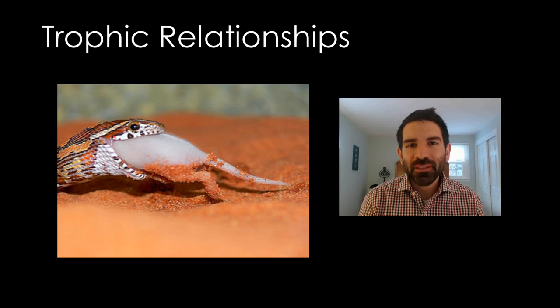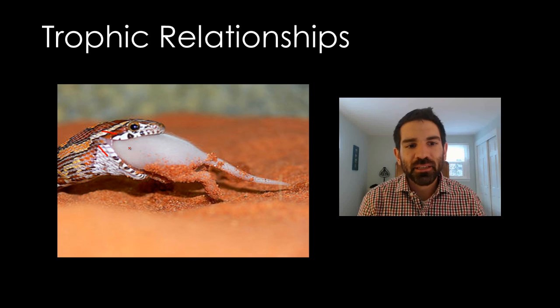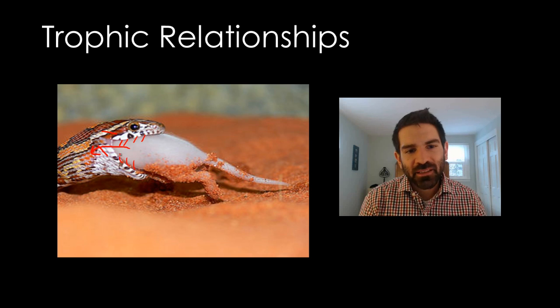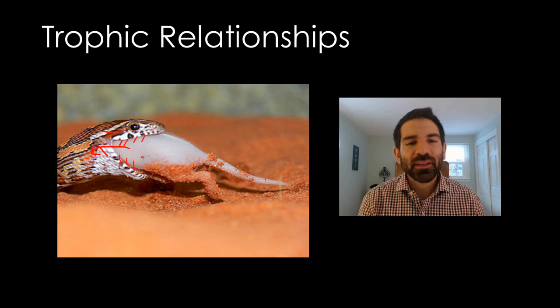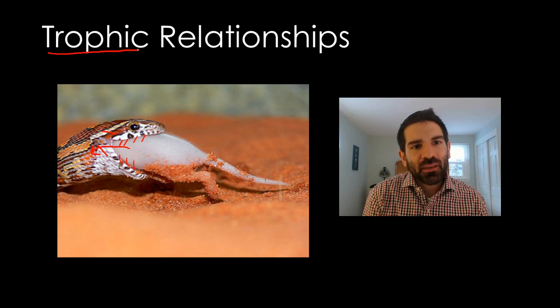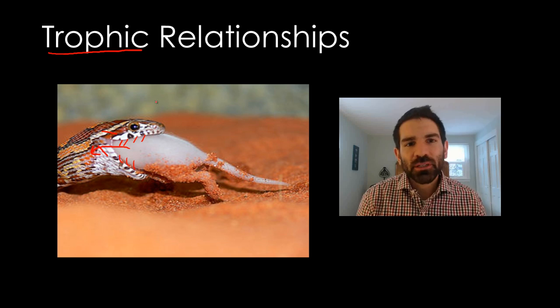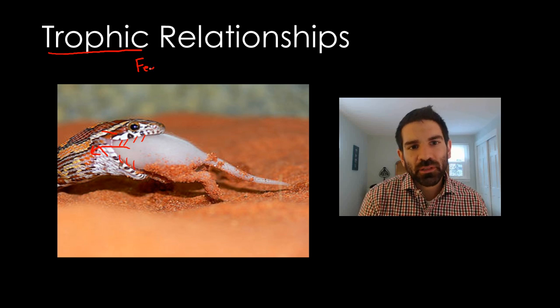Hi, this is Mr. Judd and this is a corn snake. It can unhinge its jaw and take in its prey all in one bite. It also has these backwards pointing teeth that help as the prey struggles so it can only go one way and that's down. This video is about trophic relationships or feeding relationships.